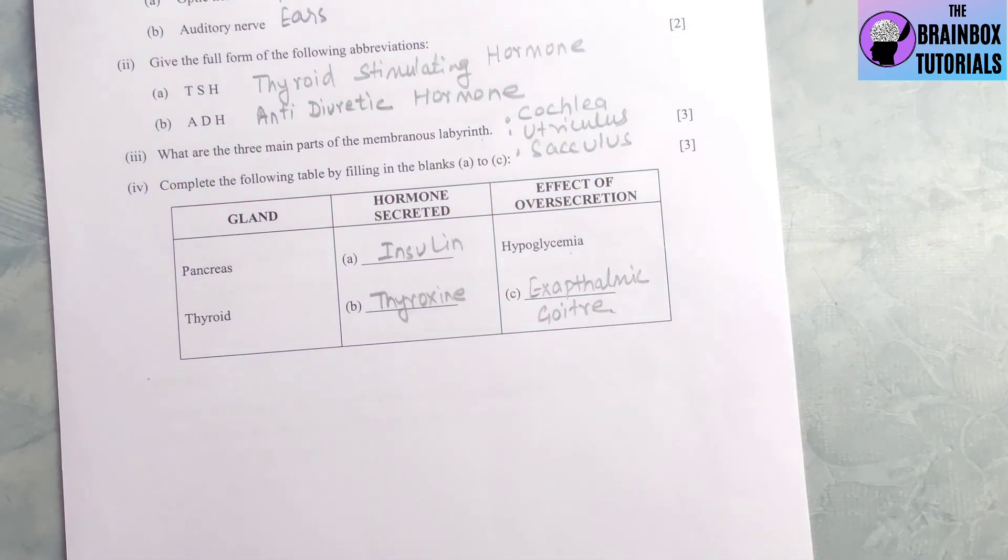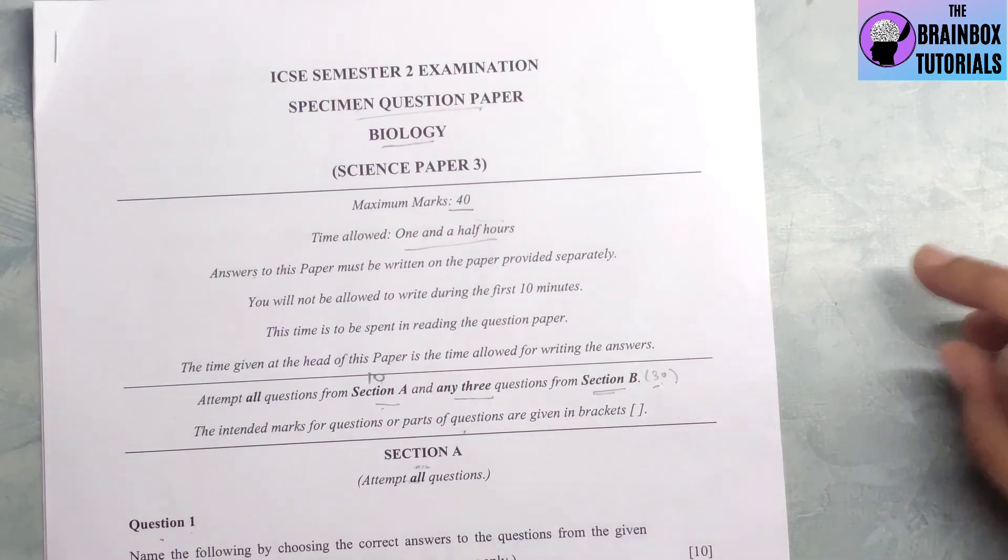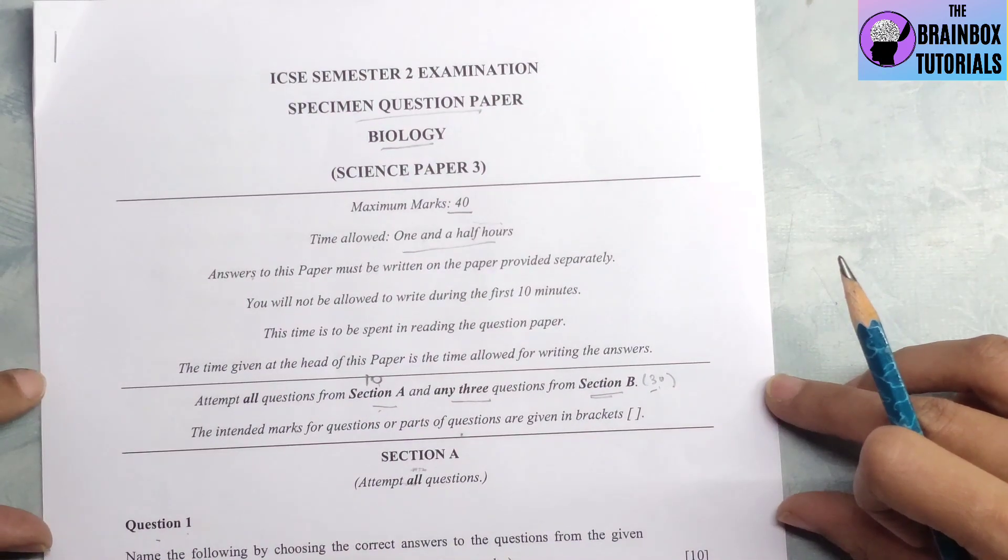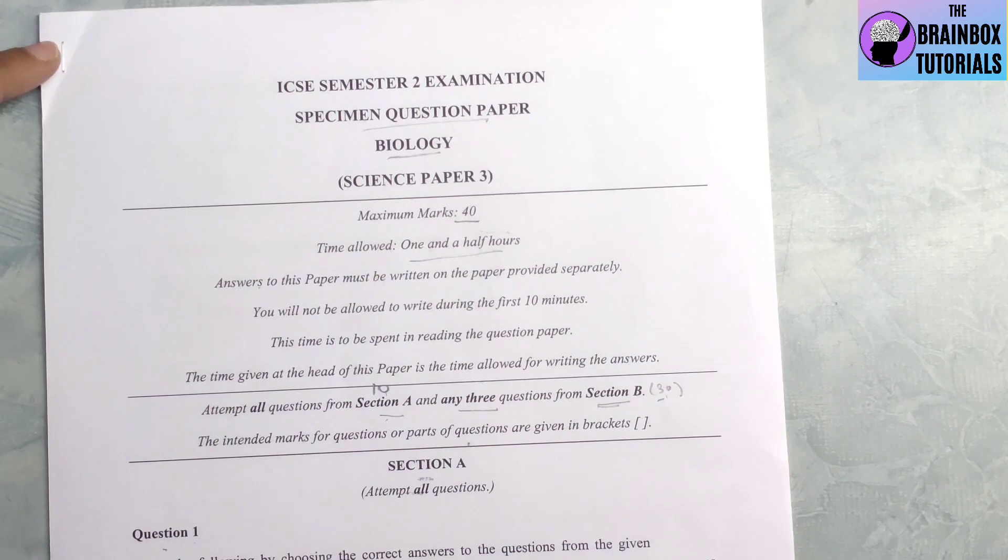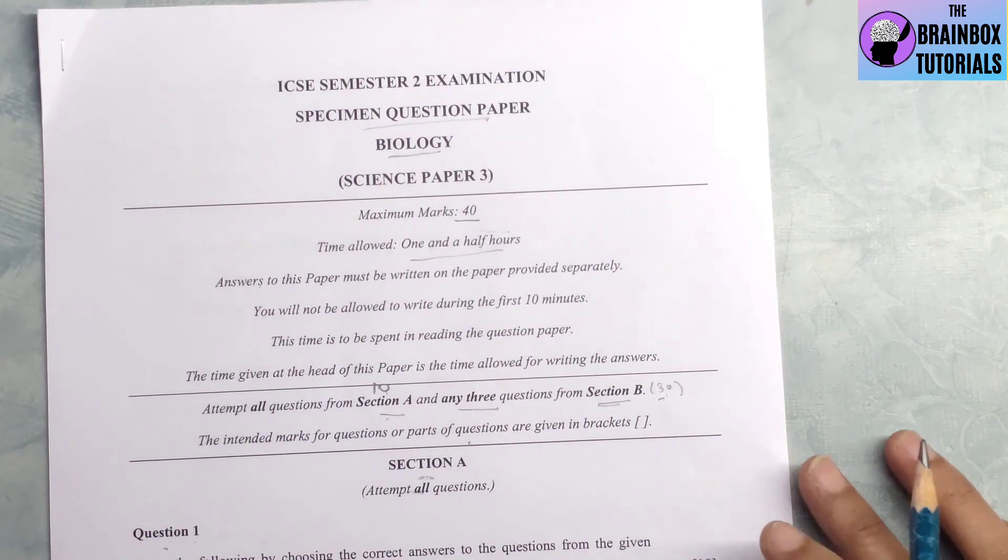With this we have come to the end of this biology specimen paper. The paper was very easy as you can see. You will go through the question answers and practice important topics of biology semester 2. I will bring up more solutions to more specimen papers soon. If you have liked this solution, please give a thumbs up and share with your friends. Do subscribe my channel, The Brain Box Tutorials. Keep learning, keep preparing. Bye-bye. Jai Hind.